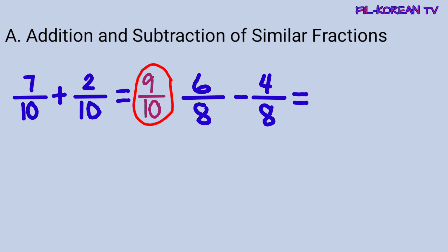Let's subtract 6 eighths minus 4 eighths. Ang gagawin lang natin, i-minus natin yung numerators. 6 minus 4 equals 2. Sunod, kukupyahin lang natin yung common denominator na 8. So, yung answer ay 2 eighths. Ang 2 eighths ay pwede pang ma-reduce sa lowest term kasi yung numerator na 2 at denominator na 8 ay meron pa silang common factor na iba maliban sa 1. Kaya, kailangan natin kunin ang GCF at i-divide sila sa kanilang GCF. Sa pagkuha ng GCF, pwede natin gamitin ang continuous division method.